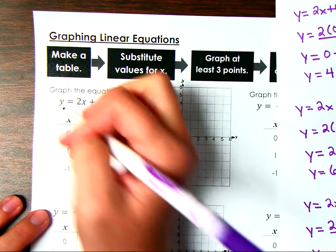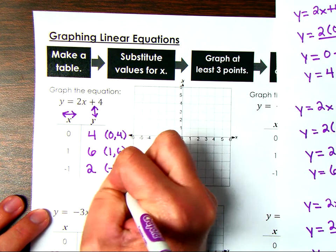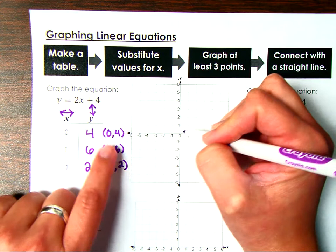These are your ordered pairs. Remember that x goes left to right and y goes up and down. When x is 0, y is 4. When x is 1, y is 6. When x is negative 1, y is 2. We always start at the origin, and we need to make sure the grid is in groups of 1 — and they are, so we're good.